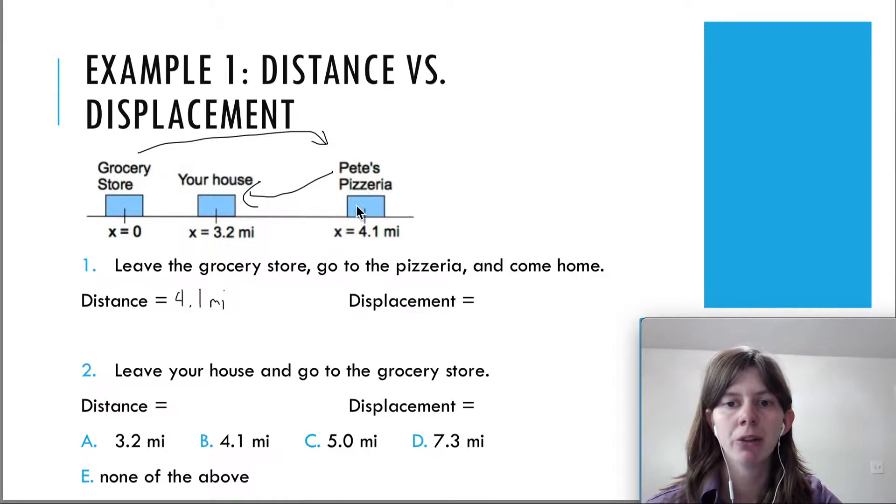Now you did not travel 3.2 miles to go from the pizzeria to your house. The distance between 3.2 and 4.1 is 0.9 miles. So you traveled 4.1 miles, and then you traveled another 0.9 miles to go back to home.